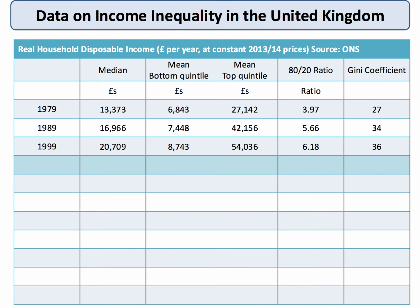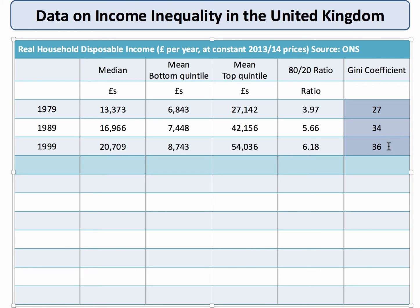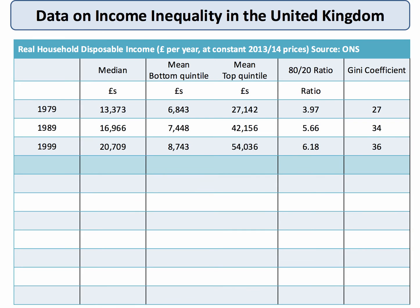Here's some data on income inequality in the UK. We take real household disposable income — that's income after tax and benefits, but also adjusted for the effects of inflation. This data is in pounds per year measured at constant 2013-14 prices. If we take the decade-long view from 1979 through to 1999, the median incomes went up in real terms, but there was a significant increase in the mean income for the top quintile — the top 20%. The 80-20 ratio went up quite sharply from just under 4 to over 6, and the Gini coefficient increased from 0.27 to 0.36. So from 1979 to 1999, there was a significant increase in income inequality in the UK.